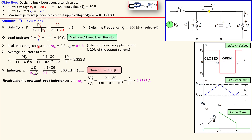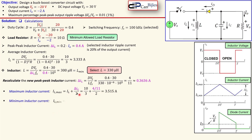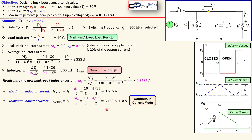The maximum inductor current is the average inductor current plus half of the peak-peak inductor current, which gives approximately 3.52 amps. The minimum inductor current, using the minus form, gives 3.15 amps. The minimum is larger than zero, which confirms we are indeed in continuous conduction mode — CCM requires the minimum inductor current to be greater than or equal to zero.